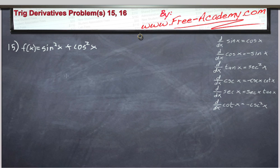Problem 15 gives us f of x equals sine squared x plus cosine squared x. Now this is interesting because we've never tackled a sine squared or a cosine squared before, so how do we do this?